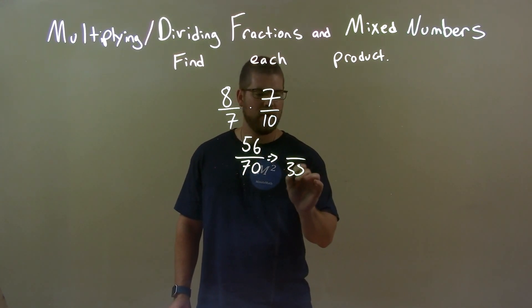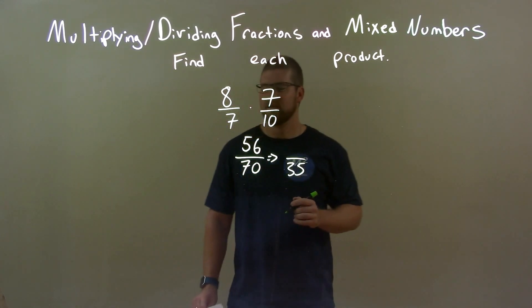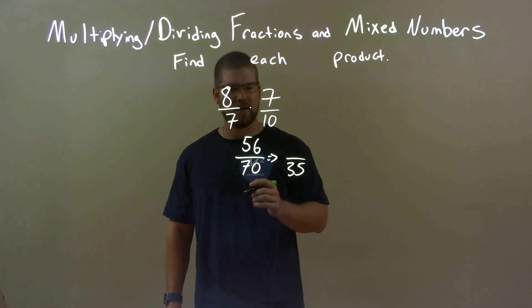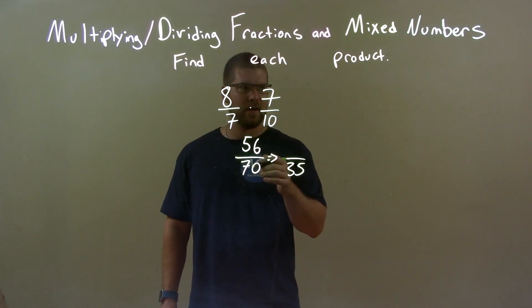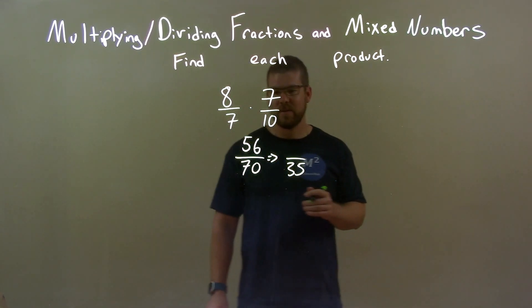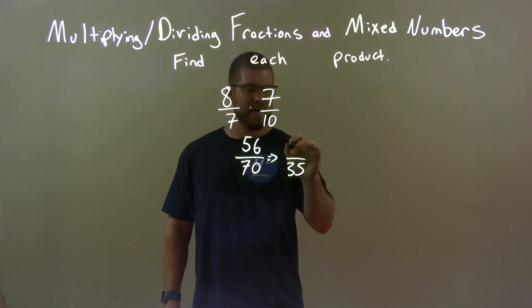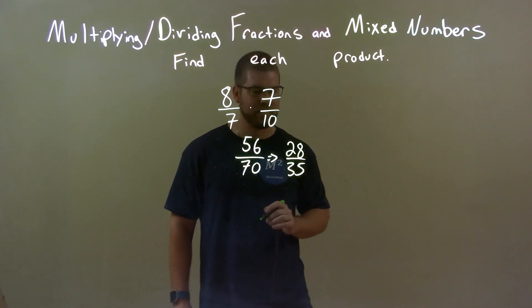70 divided by 2 is 35. And 56 divided by 2, well that's going to come out to be what? So 50 divided by 2 is 25, 6 divided by 2 is 3, so we have 28.